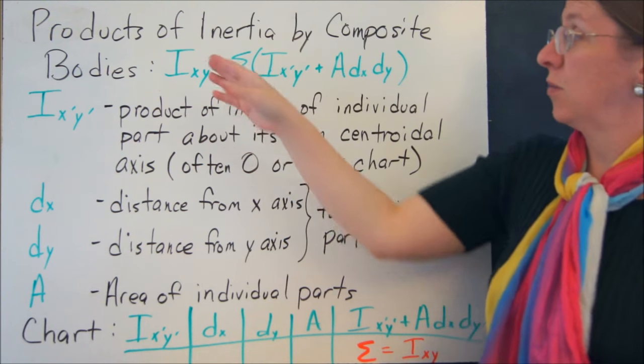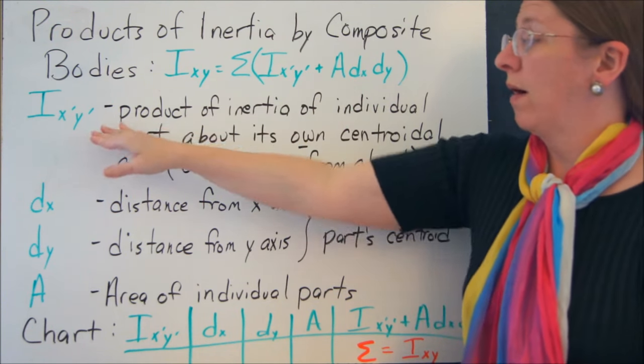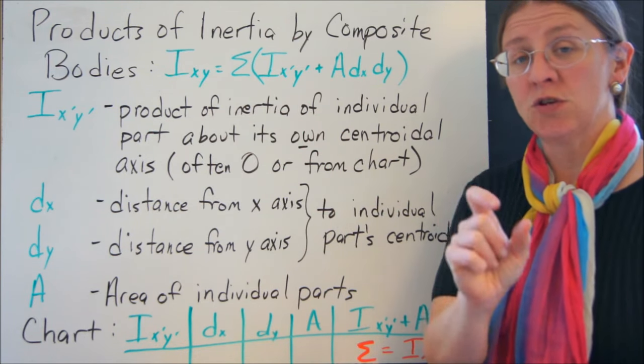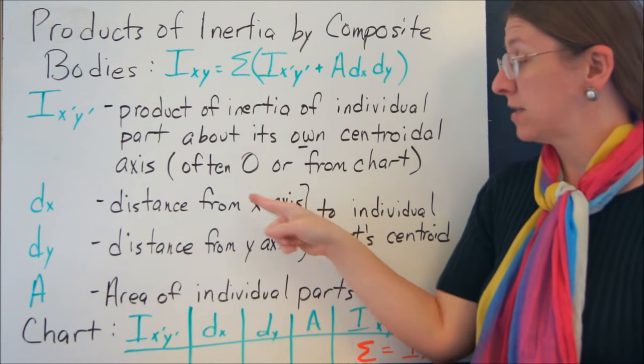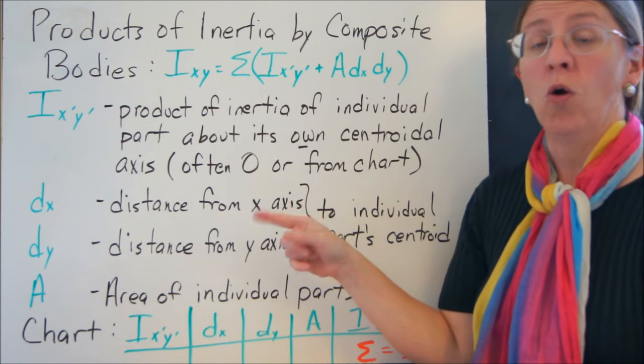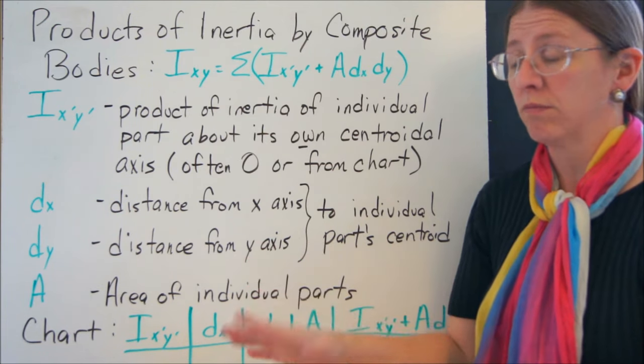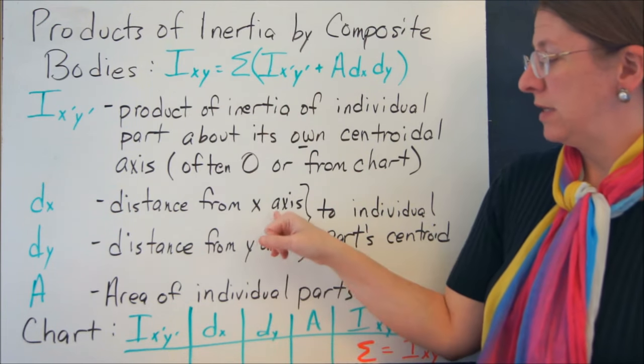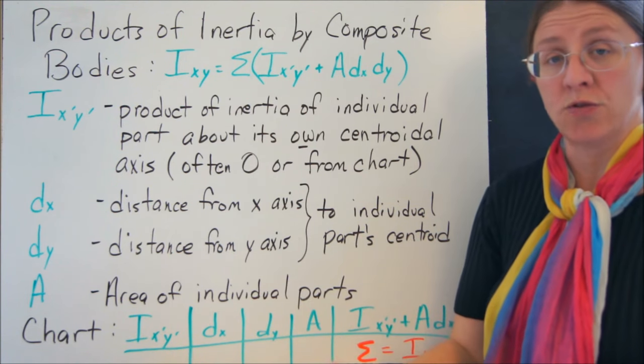So how does this actually work with composite bodies? This is the same thing I just had up there, where Ixy, this part, is the product of inertia of any individual one of your composite bodies about its own centroidal axis. Now that's the part that's generally zero, or you can look it up in a chart if you have some other basic shape.